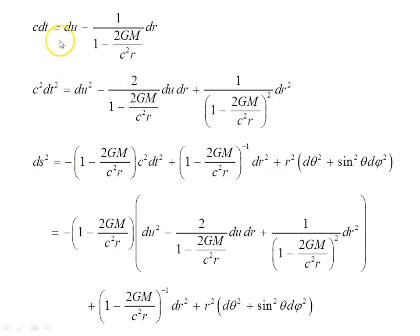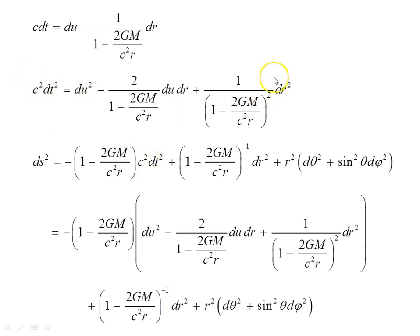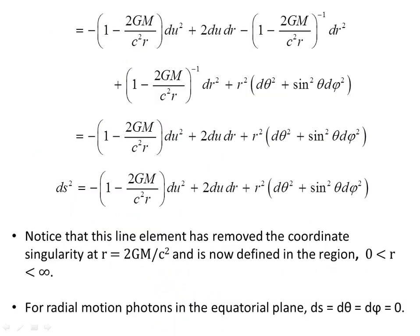Rearranging to get c dt by itself, then taking c squared dt squared, we get du squared minus this object, plus this term on the end — simply squaring the difference of these terms. Substituting into the Schwarzschild metric, we substitute c squared dt squared with this expression, apply it into the metric, and after tidying up with algebraic manipulation, we arrive at our new line element.